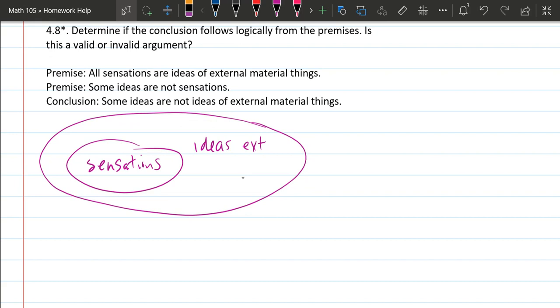Our first premise, I've already diagrammed it out here, so let's highlight the two parts of it. It says all sensations are ideas of external material things. I'm going to shortcut a little bit here and just use ideas of external.